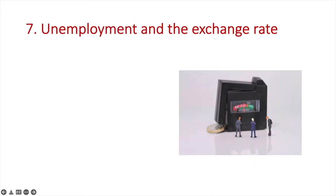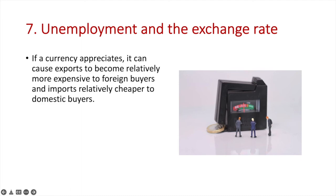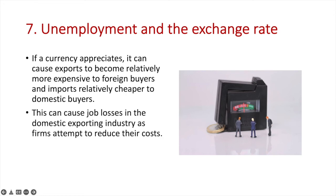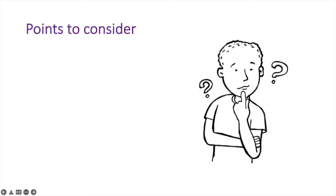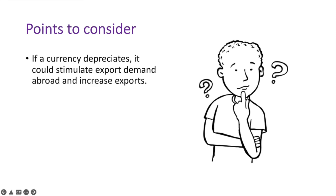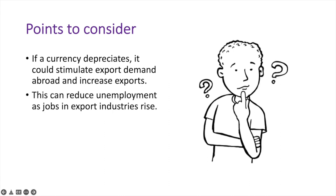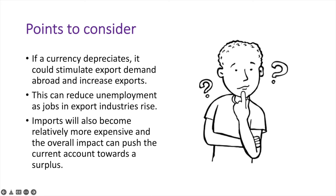Seventh is the relationship between unemployment and the exchange rate. If the currency appreciates, it can cause exports to become relatively more expensive to foreign buyers and imports relatively cheaper to domestic buyers. This can cause job losses in the domestic exporting industry as firms attempt to reduce their costs, and the overall impact can push the current account towards a deficit. Conversely, if a currency depreciates, it could stimulate export demand abroad, increase exports, and reduce unemployment as jobs in export industries rise. Imports will also become relatively more expensive and the overall impact can push the current account towards a surplus.